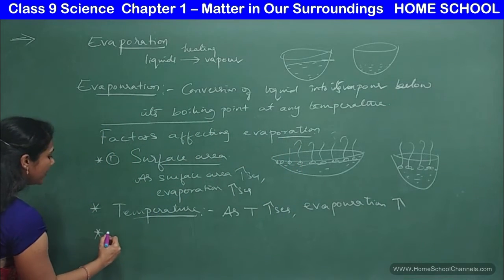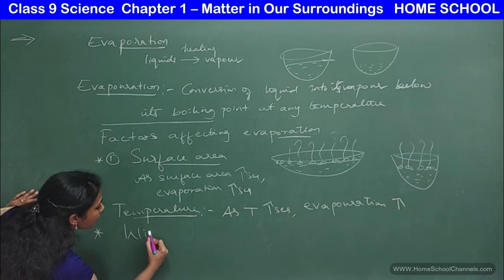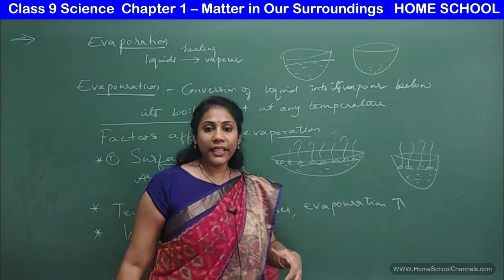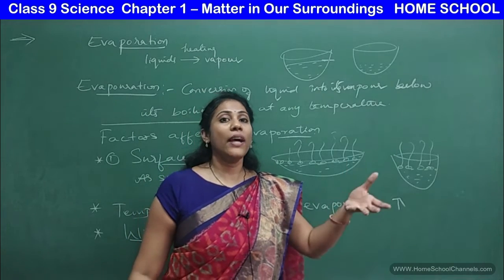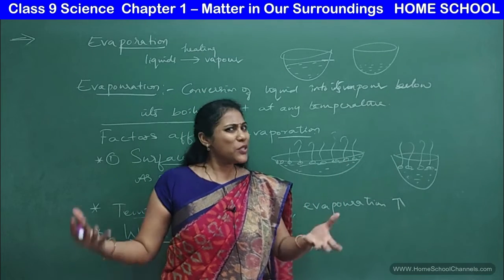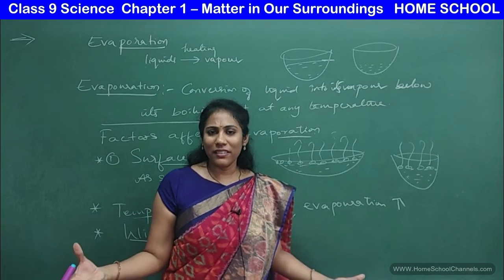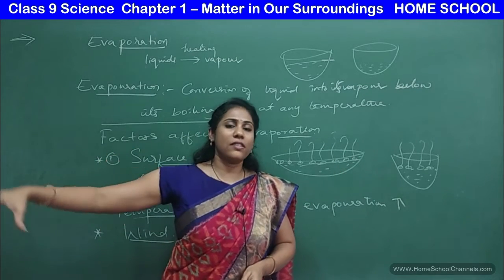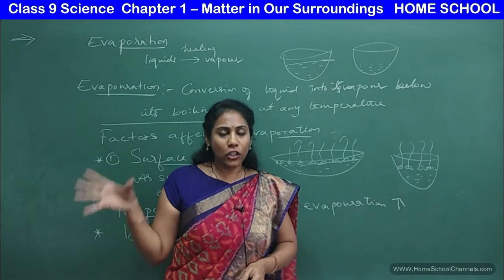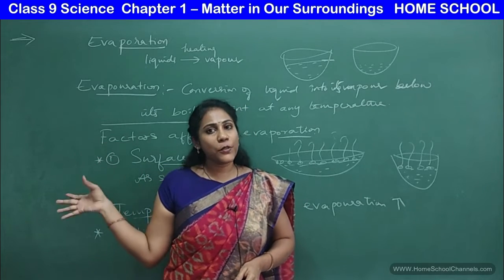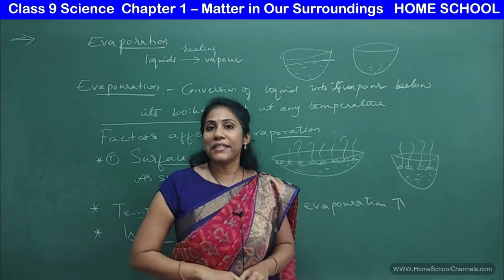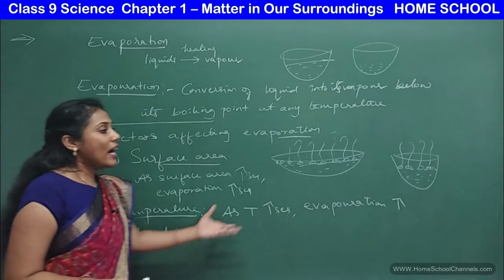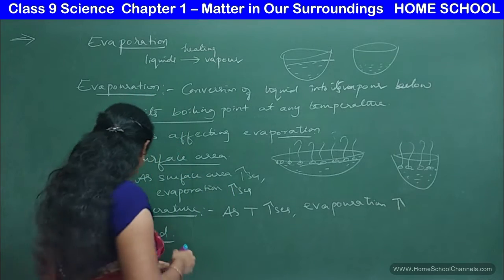The third factor is wind. Even during seasons with lots of wind, clothes get dry very soon because the evaporation increases. As the wind blows onto a wet cloth, it gets dry soon. So as wind speed increases, evaporation also increases.